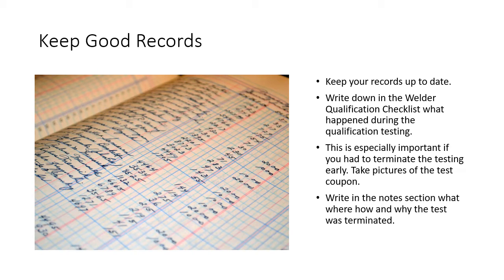Keep good records. This applies to welder continuity and anything to do with welding. Write down your welder qualification checklist — what happened, when, where you were when you saw the welder welding, maybe a job number, the date and time, and what welding process they were using. Just write it down — that's the key.